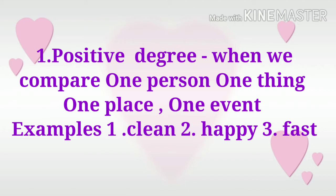The first degree is the positive degree. When we describe one person, one place, one thing, or one event, it is called the positive degree. For example, number one: clean, number two: happy, number three: fast. In this example, we are describing one person, one place, one thing, or one event.